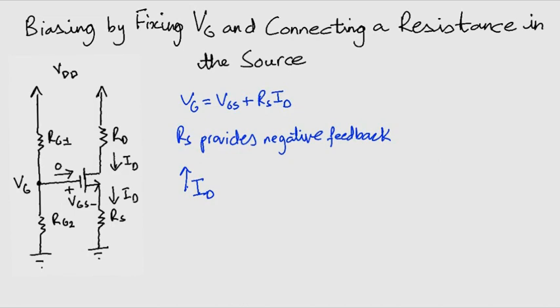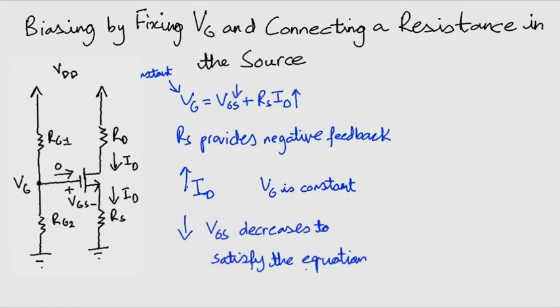Looking at the equation on your screen, we see that VG is constant. So if ID increases, VGS will have to decrease.